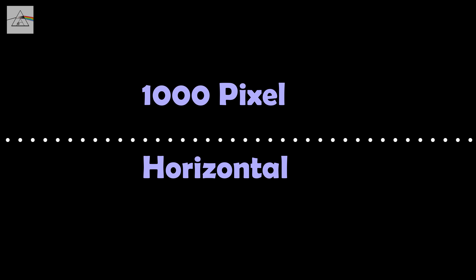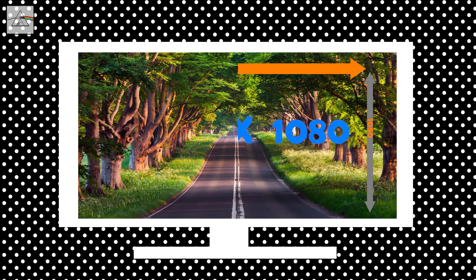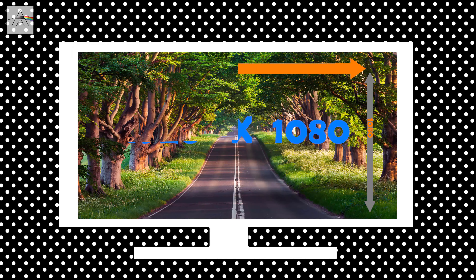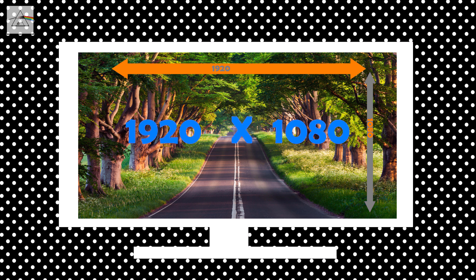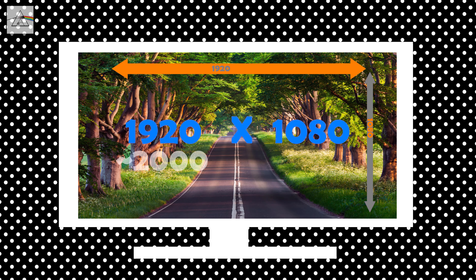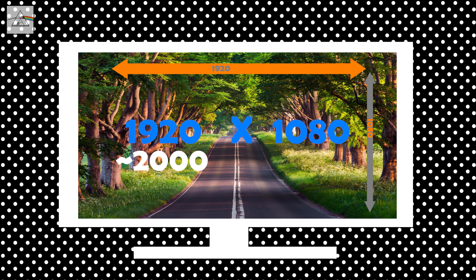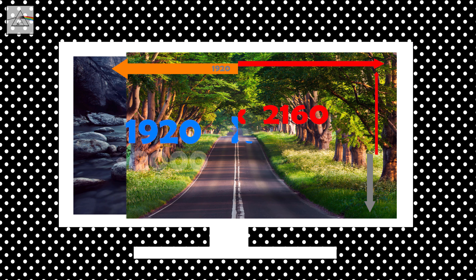First of all, we will talk about what is K in any resolution. K means 1000 pixels horizontally. If we talk about 1080p, it is 1920 horizontal and 1080 pixels vertically. So, 1920 is almost 2000, so you can call this 2K.